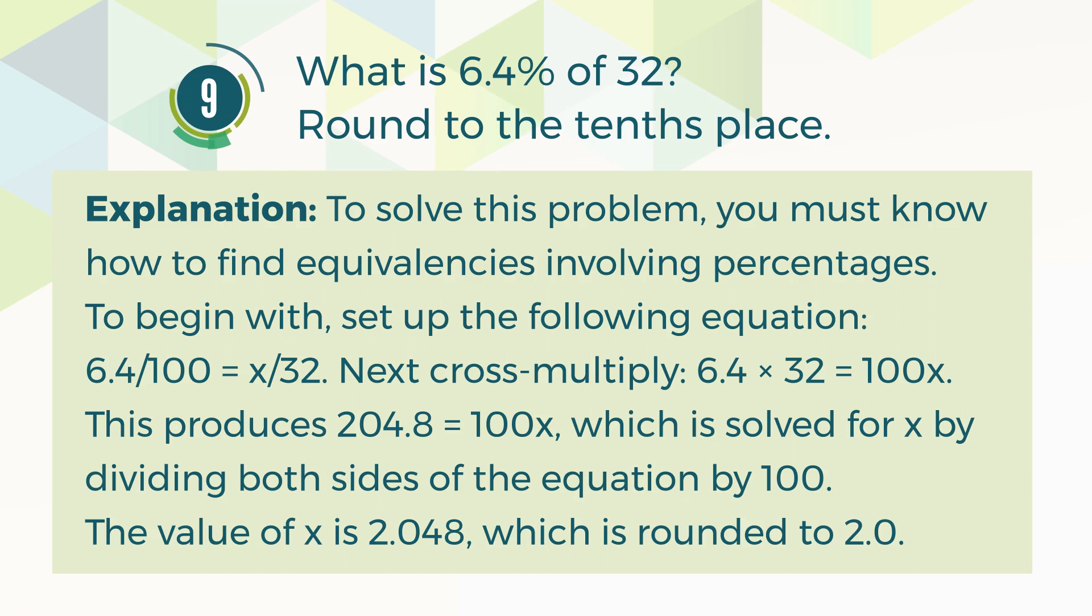This produces 204.8 is equal to 100 multiplied by X, which is solved for X by dividing both sides of the equation by 100. The value of X is 2.048, which is rounded to 2.0.